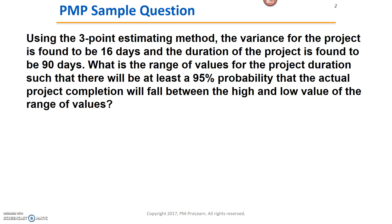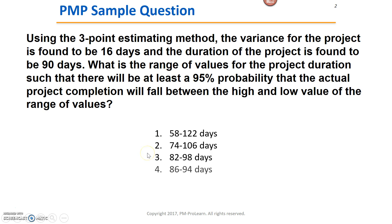You may have come across a PMP sample question that looks like this: Using the three-point estimating method, the variance for the project is found to be 16 days and the duration of the project is found to be 90 days. What is the range of values for the project duration such that there will be at least a 95% probability that the actual project completion will fall between the high and low value of the range? They give you a couple of day ranges, and our goal is to figure out which one gives me that 95% probability of occurrence.